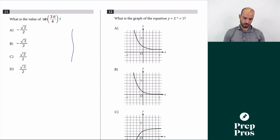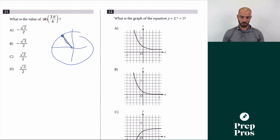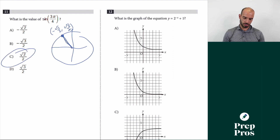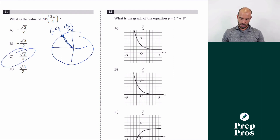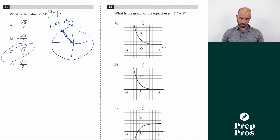Number 11: what is the value of sin(3π/4)? Drawing a quick unit circle — the angle 3π/4 is in the second quadrant. The value there is negative √2/2 for cosine, but sine is the y-coordinate, so it's positive √2/2.